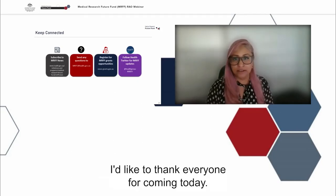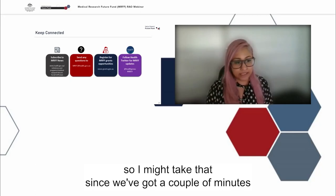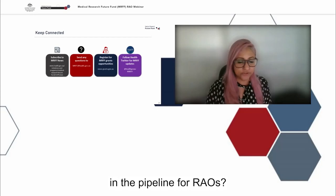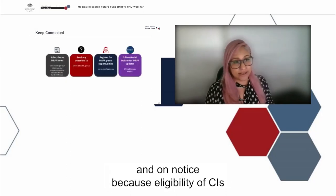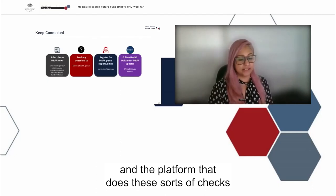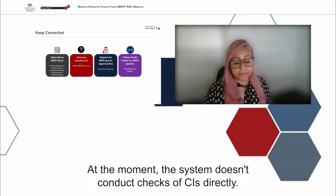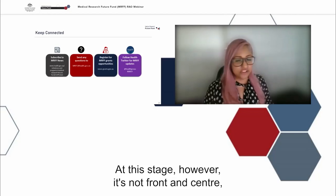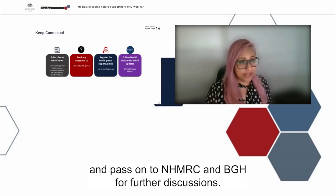There is one additional question: are there any improvements to the checking of eligibility of CIs in the pipeline for REOs? This one we'll have to take on board and on notice because eligibility of CIs and the platform that does these checks is actually with the hub — NHMRC through their system Sapphire. At the moment the system doesn't conduct checks of CIs directly, but this has been a question raised in the past and is on their radar. It's definitely something for us to consider and pass on to NHMRC and BGH for further discussions.